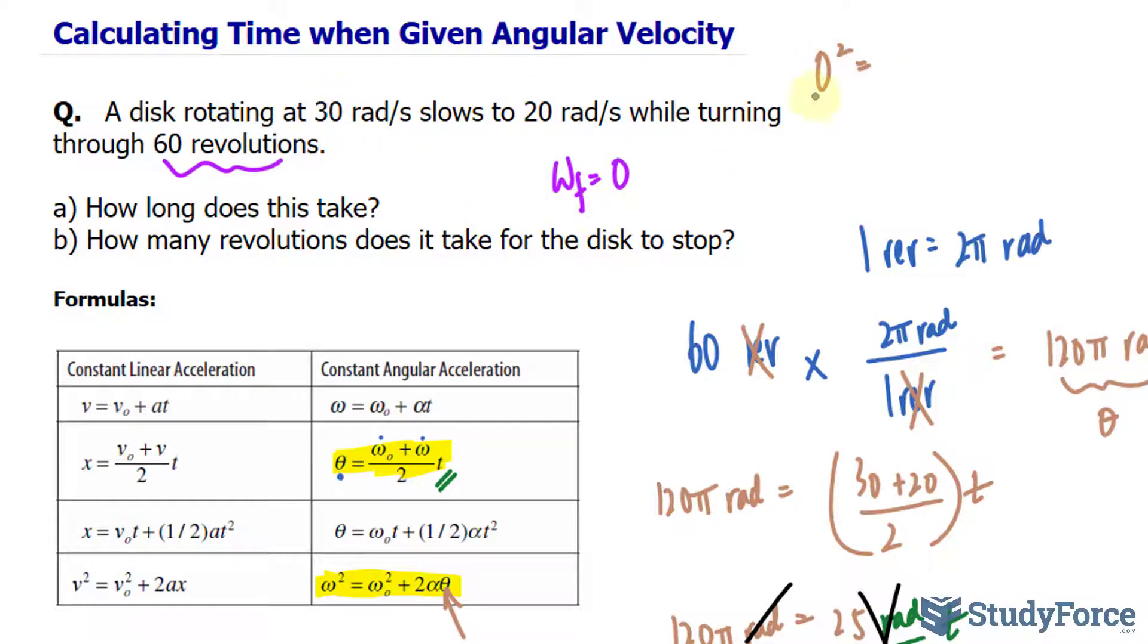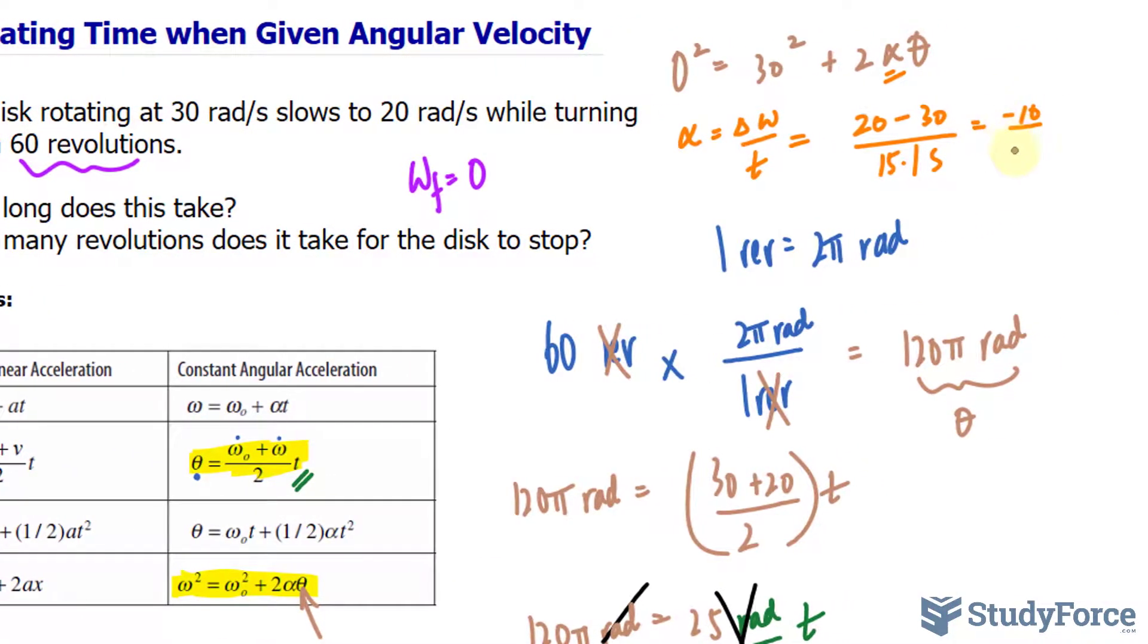Zero squared is equal to 30 squared plus 2 times, this alpha symbol represents angular acceleration. I'll show you how to calculate that in a moment. And what we're looking for is theta. To calculate the angular acceleration, we'll take the change in angular velocities and divide it by the time. The change in angular velocities was from 30 to 20. So final minus initial. Final minus initial and that took how much time from the previous question? It took 15.1 seconds. Right? So by taking negative 10 divided by 15.1 seconds, we have found our angular acceleration.